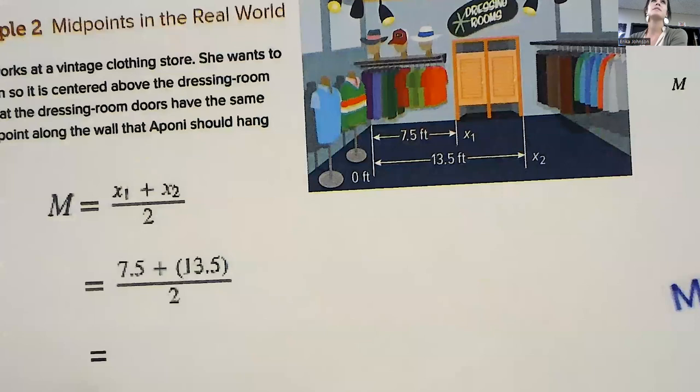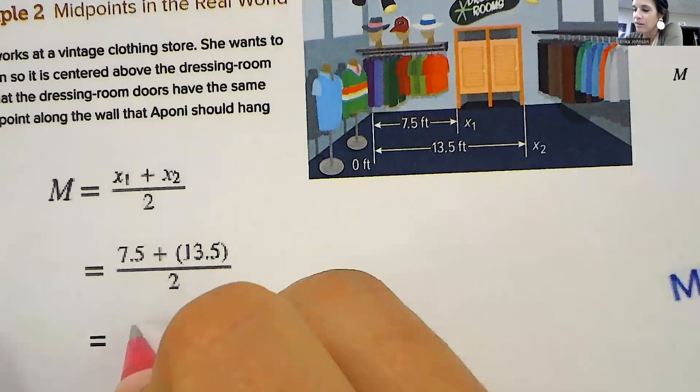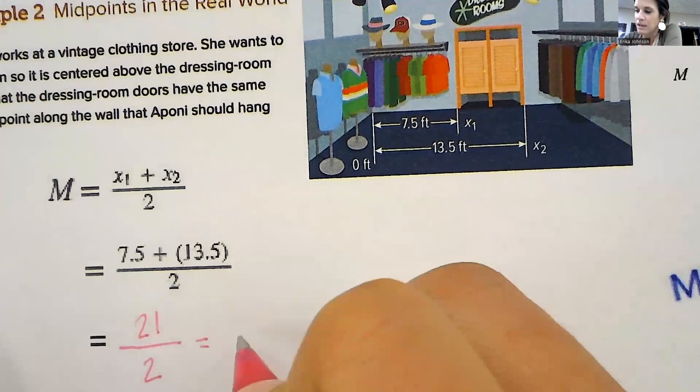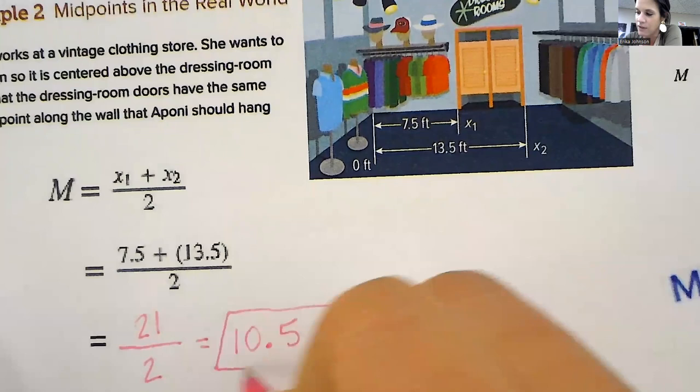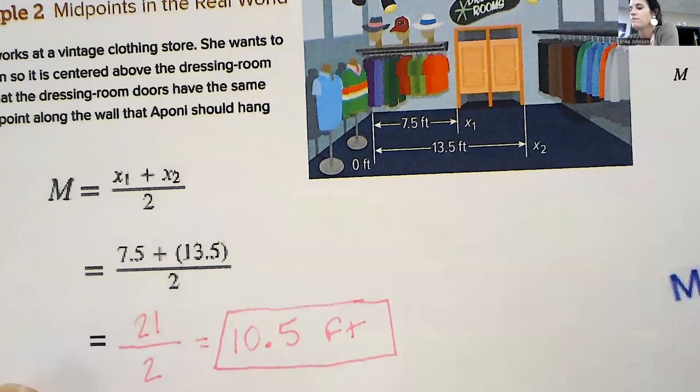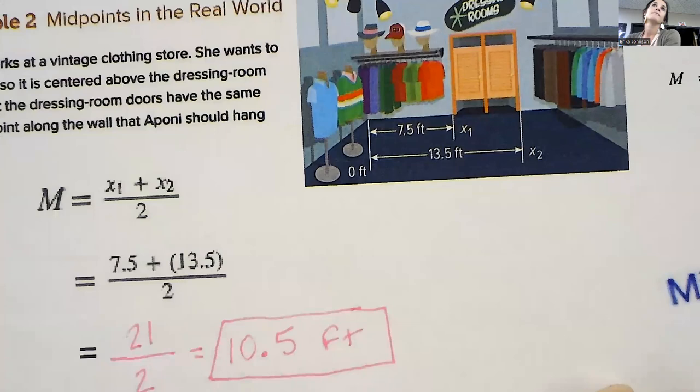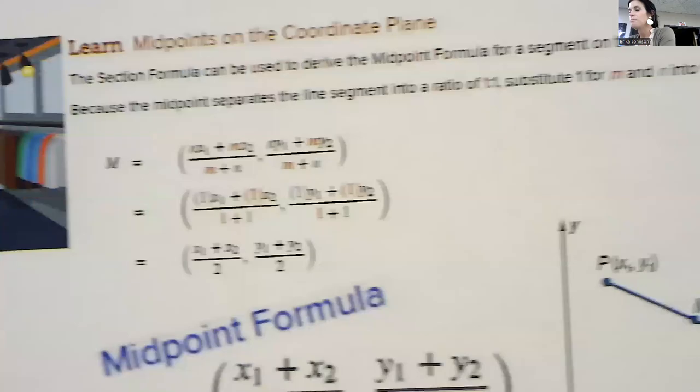So they've already set it up for us. They added up 7.5 plus 13.5 and divide that by 2. So if I add that, that would give me 21. 21 divided by 2. That's going to be at 10.5 feet. 10 and a half feet. This is where the center of the picture should be.